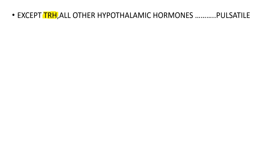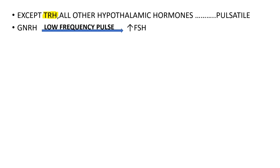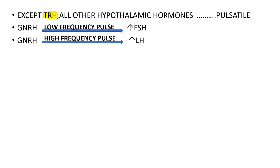Remember that except TRH, all other hypothalamic hormones are secreted in a pulsatile manner. Importantly, GnRH secreted by the hypothalamus stimulates FSH and LH release from the anterior pituitary. GnRH at a low frequency pulse results in increased FSH secretion, while GnRH at a high frequency pulse results in increased LH secretion.